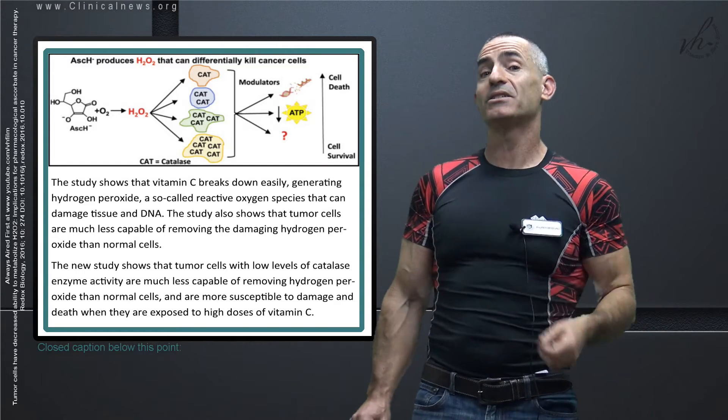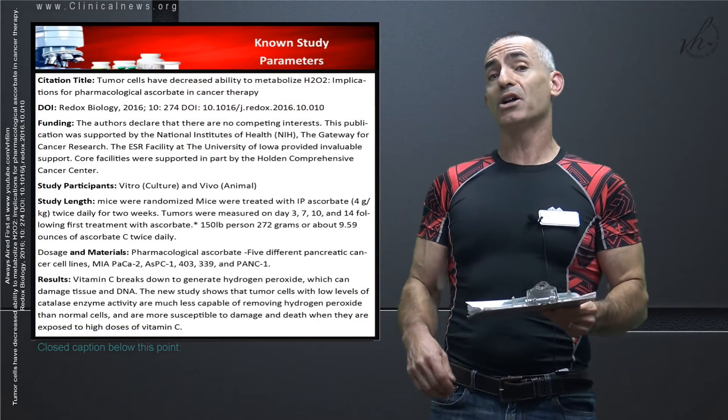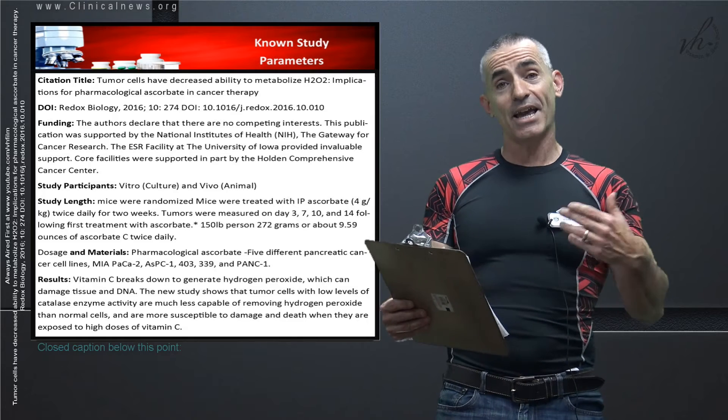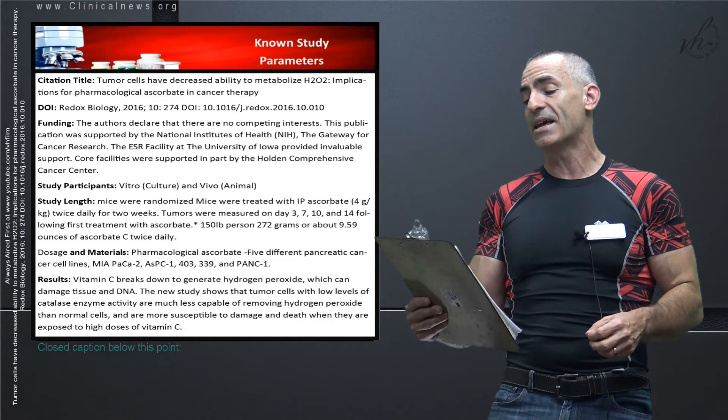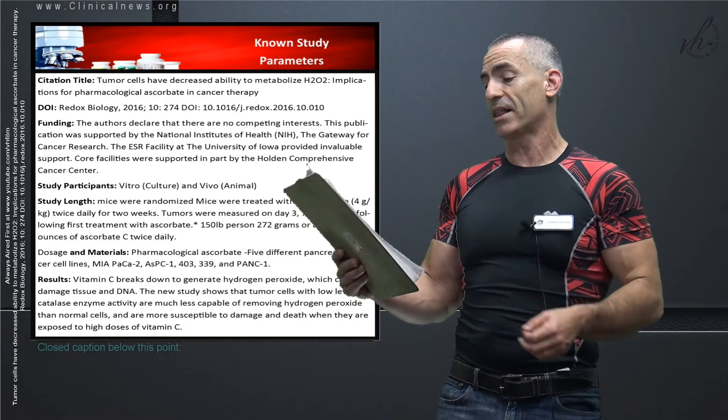Alright, that's enough of a prelude. Let's go right into the study parameters. Citation title, if you want to bring to your oncologist for further research: Tumor cells have decreased ability to metabolize H2O2, hydrogen peroxide, implications for pharmacological ascorbate and cancer therapy. DOI as follows. Funding, study participants both in culture and in animal which is important to me.